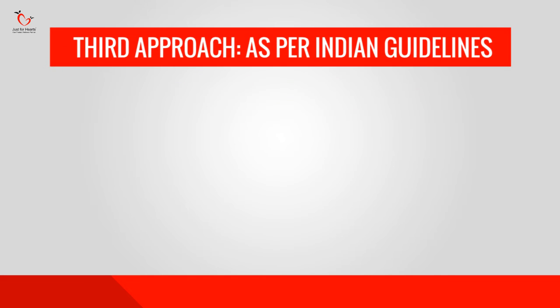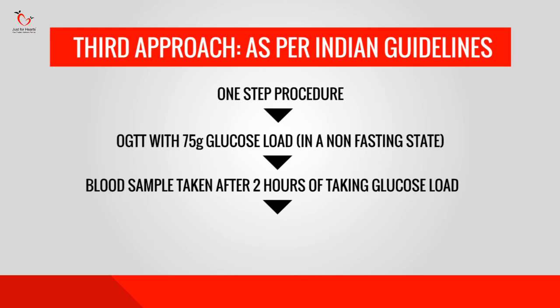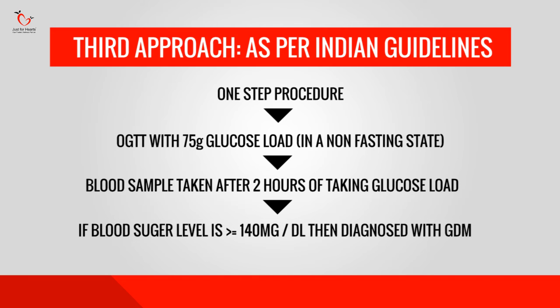The third approach is followed as per Indian guidelines. Because during pregnancy there is morning sickness, nausea, and vomiting, most women cannot come in a fasting state. So if you come in a non-fasting state, you are given a glucose load of 75 grams, and then your blood sample is collected after 2 hours of taking the glucose load. If your blood sugar level is more than or equal to 140 mg/dL, then that woman is diagnosed with gestational diabetes or diabetes in pregnancy.